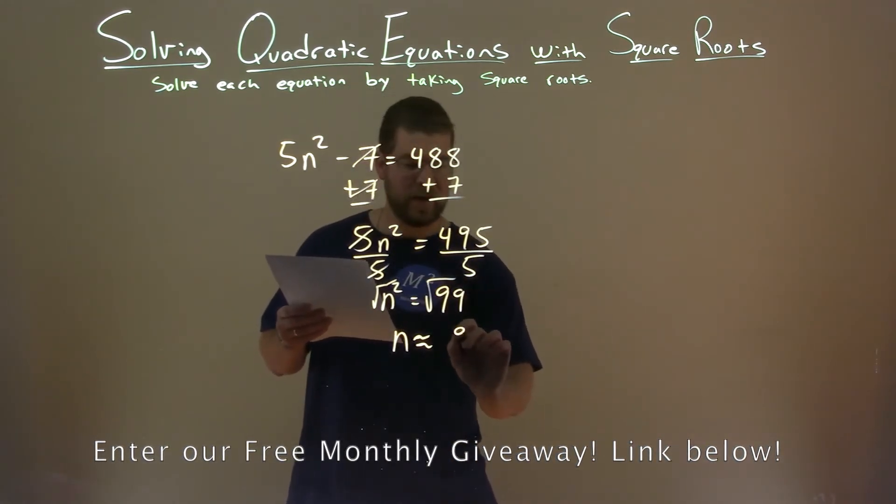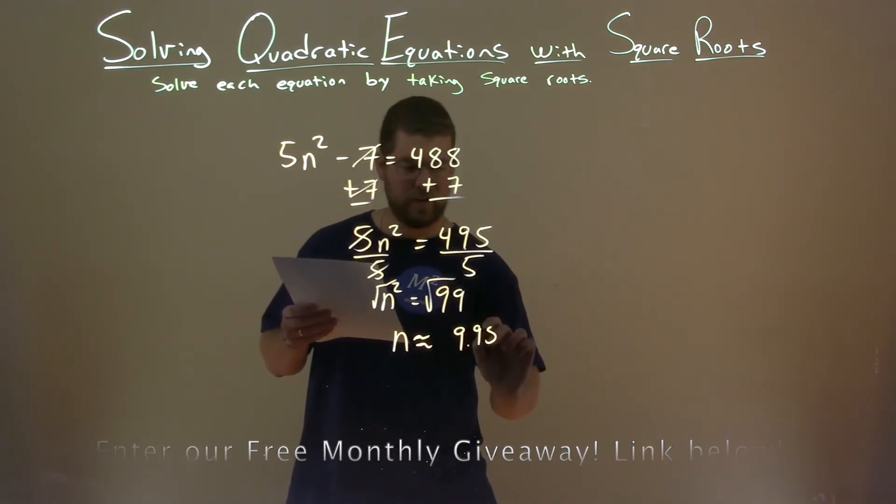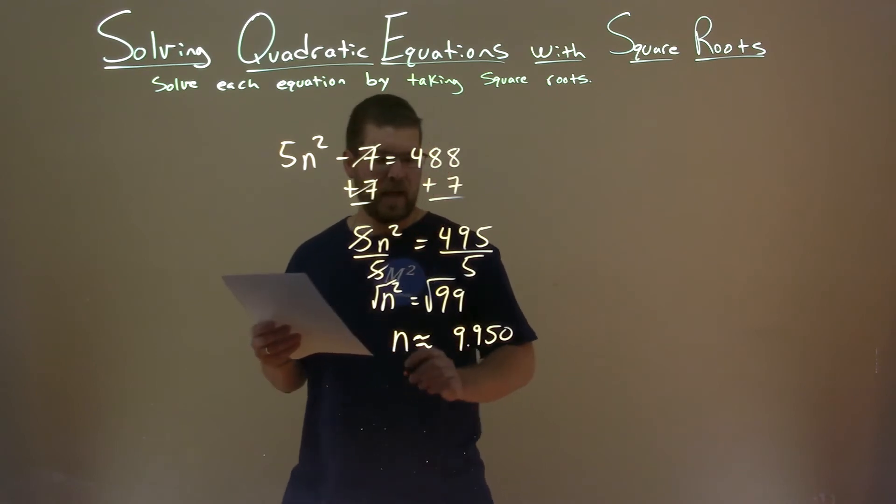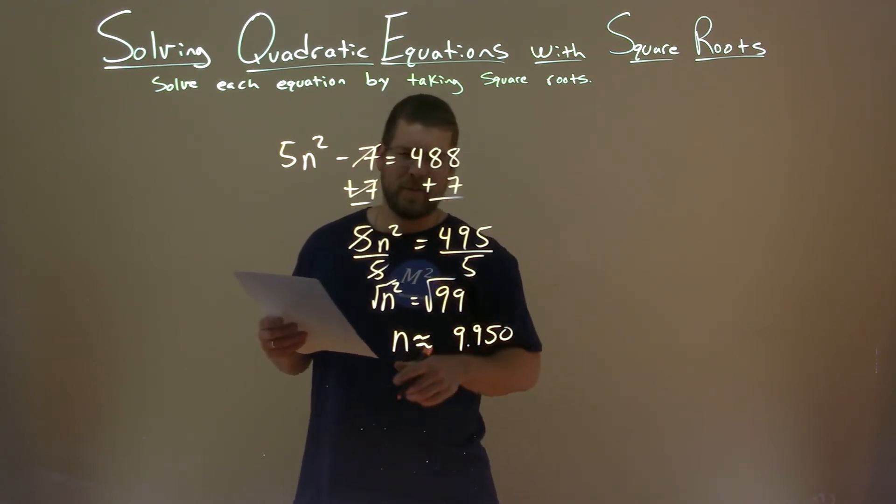Well, square root of 99 is 9.950, not 33. And if you were thinking 33, let me know down below.